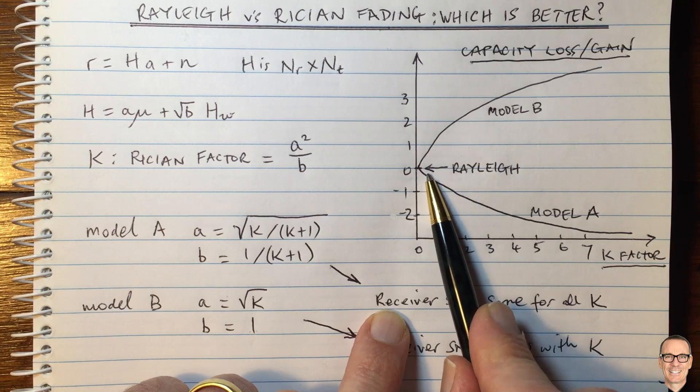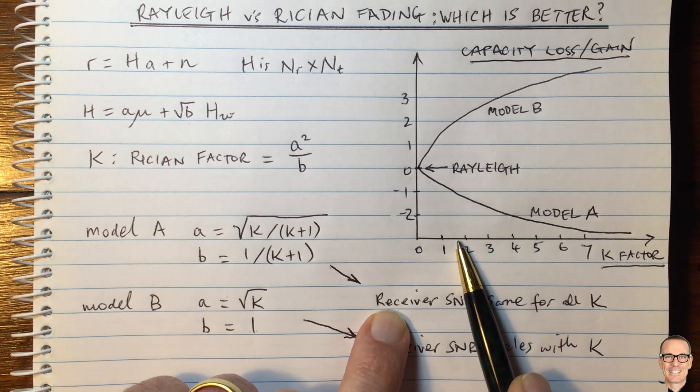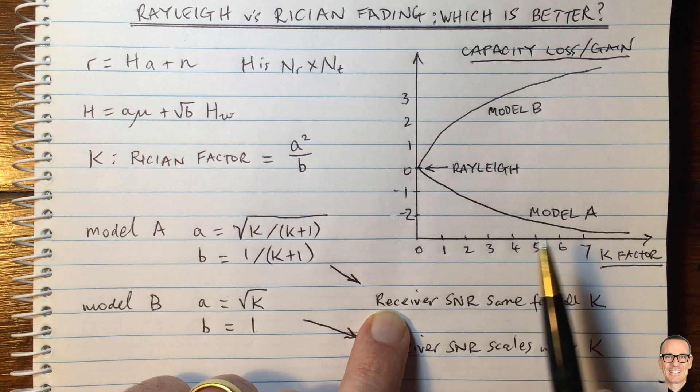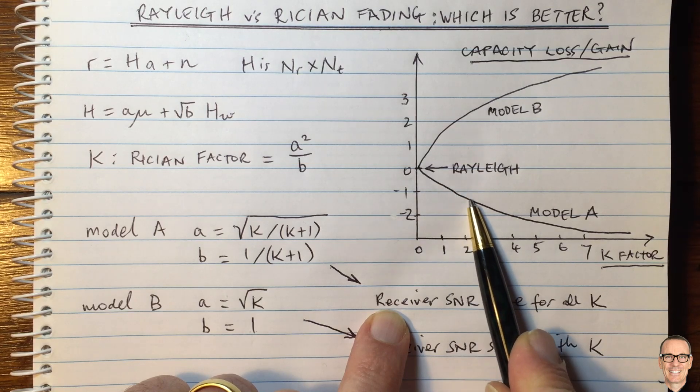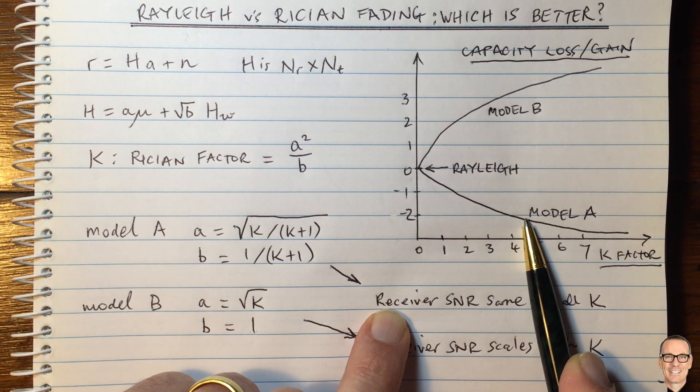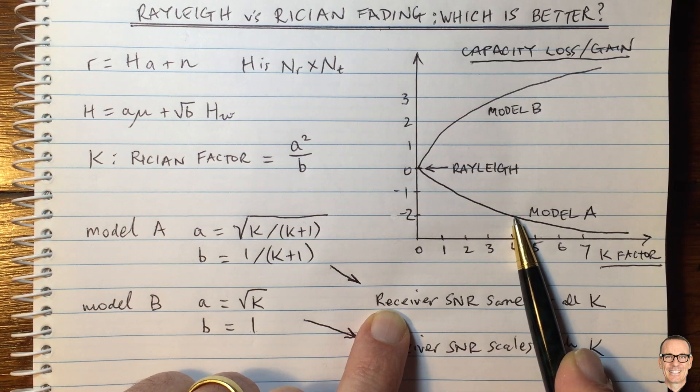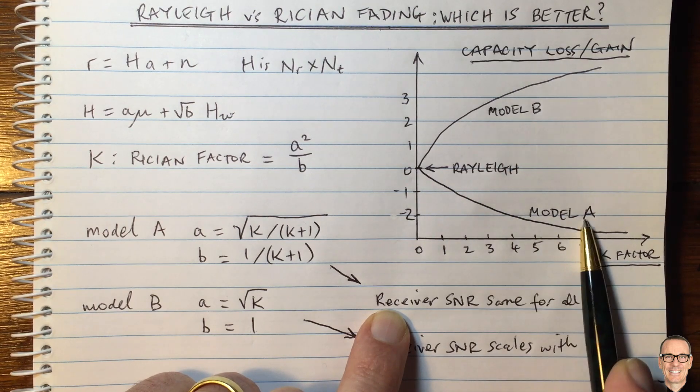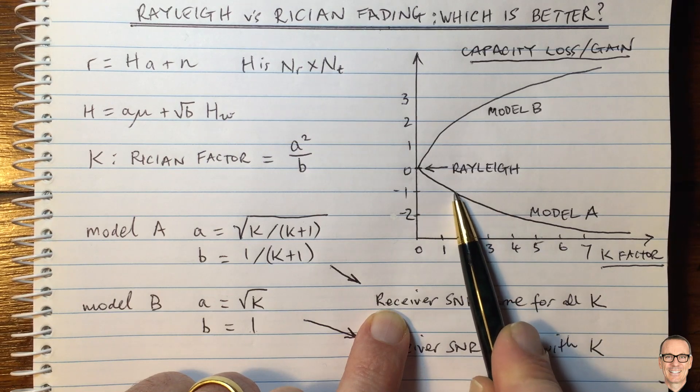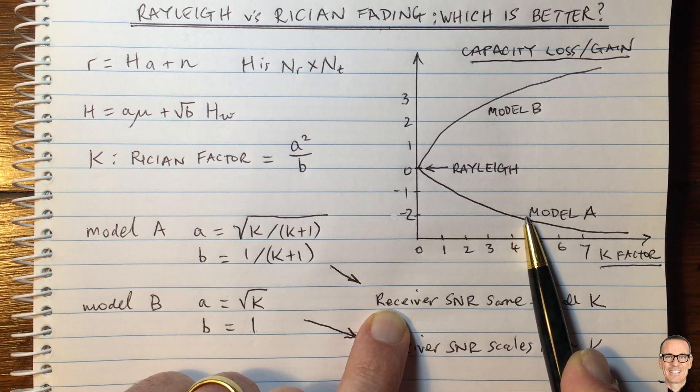And for that scenario, it certainly is the case as there's less energy in the reflective paths, then there's less capacity because the dominant path doesn't give you the diversity that the reflective paths do. And as you use model A and increase K, you're getting less energy in your reflective paths.